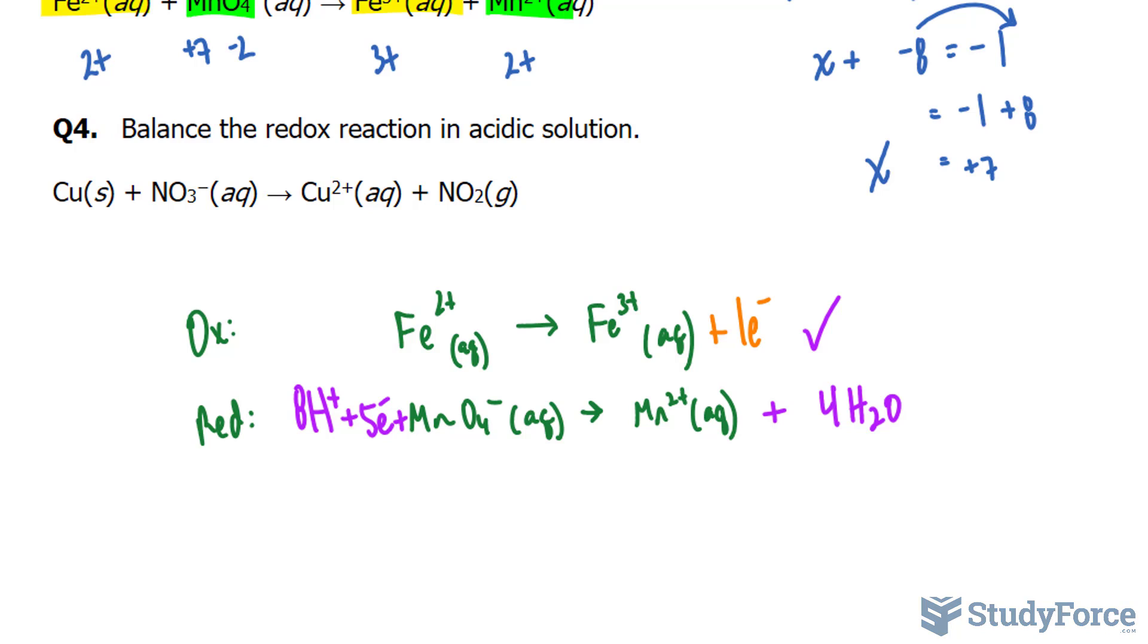The next thing that we need to do is cancel out the electrons found in the products here and the reactants here. We only have 1 electron up here, so I'm going to multiply this whole equation by 5. That way, there will be a balance 5 and 5. By multiplying this whole equation by 5, we add a coefficient here, a coefficient here, and this number 1 becomes a 5.